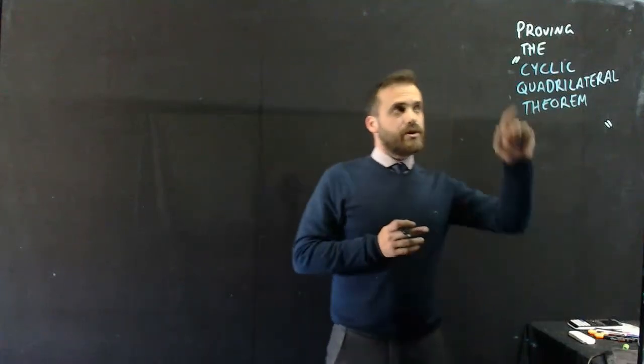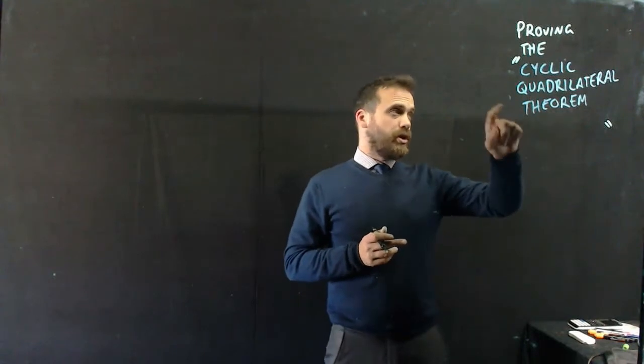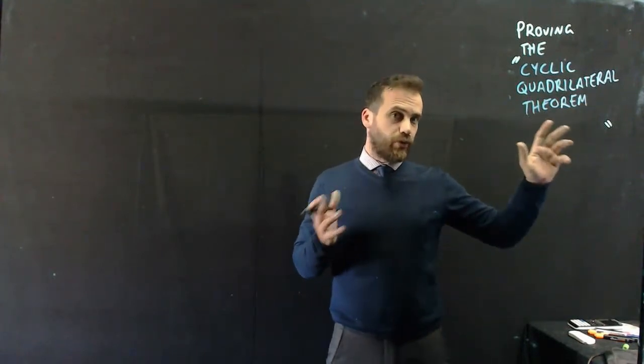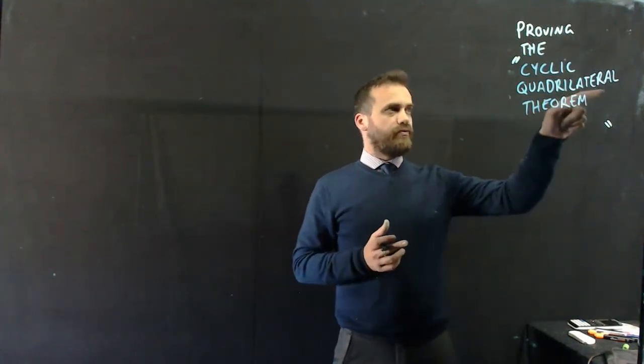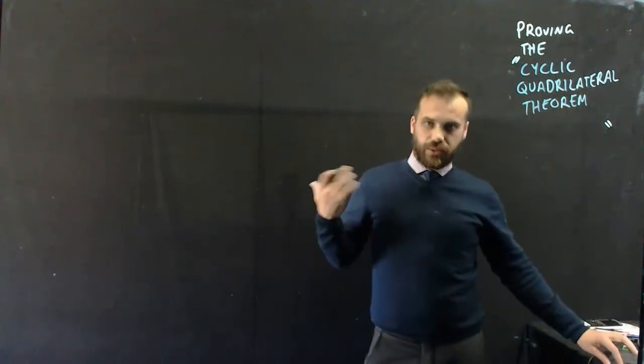Still proving circle theorems. This time we're going to prove the cyclic quadrilateral theorem. Cyclic means circle, quadrilateral means a shape with four sides. This is a shape with four sides inside a circle.